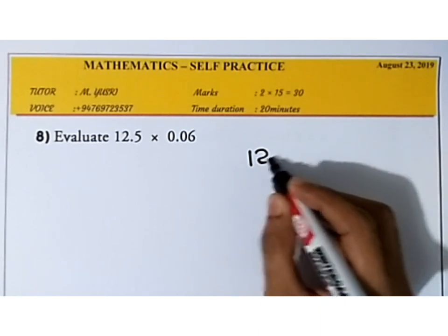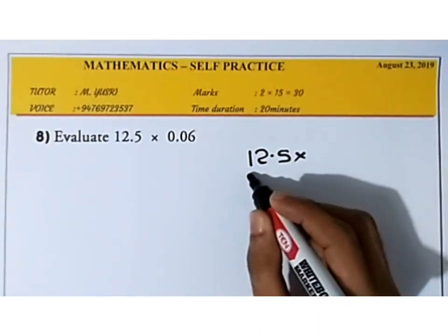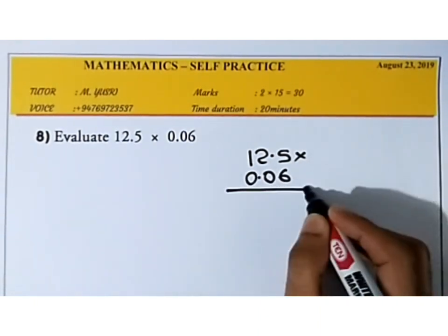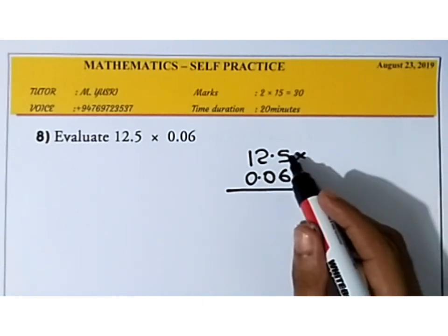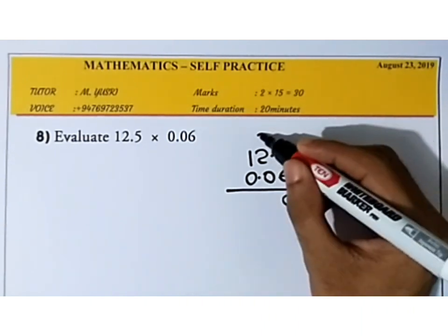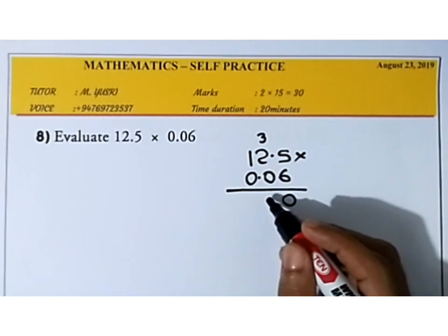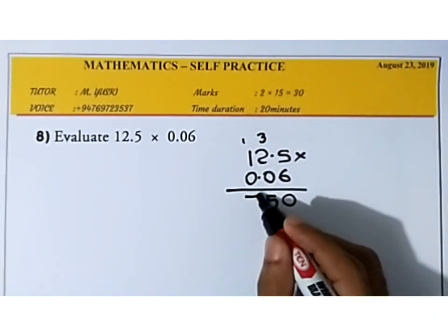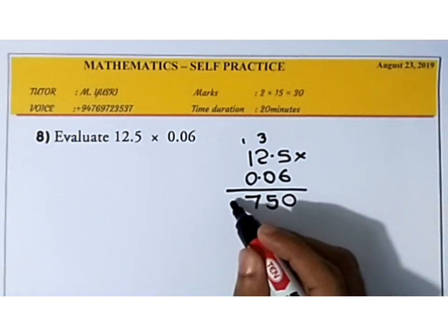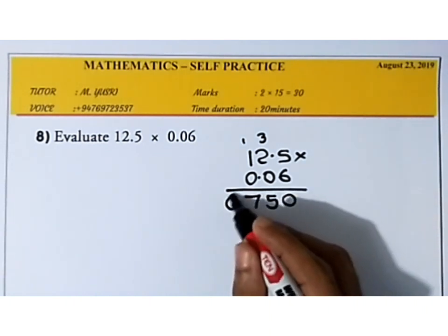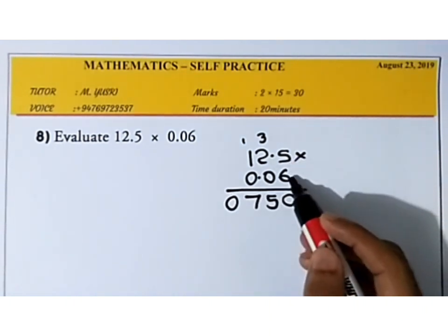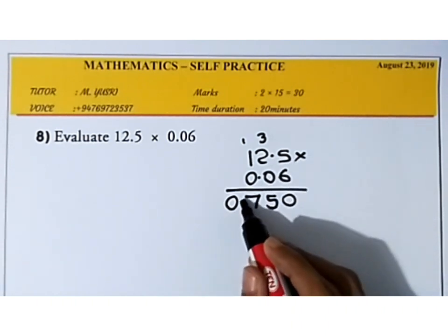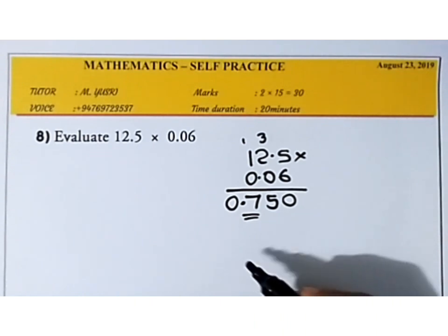To simplify 12.5 × 0.06: ignore the decimals and multiply. 6 fives are 30, carry 3; 6 twos are 12 plus 3 is 15, carry 1; 6 ones are 6 plus 1 is 7. Now count decimal places: one in 12.5 and two in 0.06 — total three. So place the decimal to get 0.750.